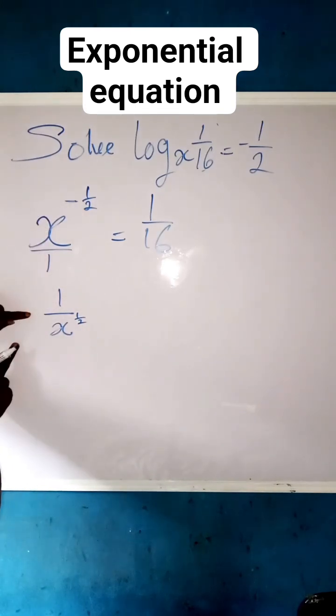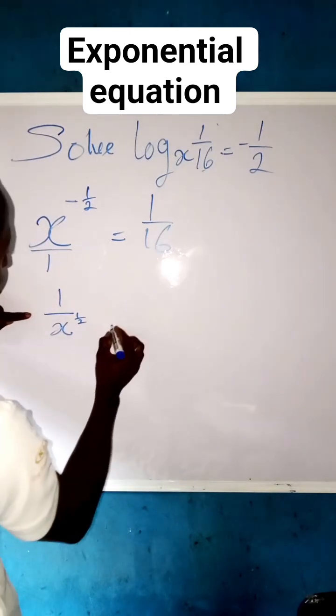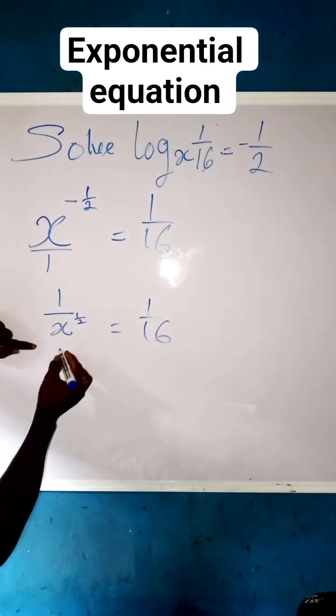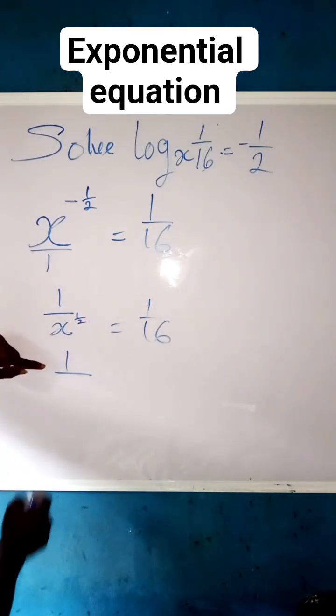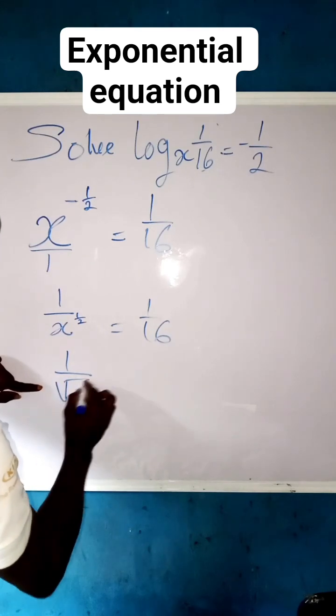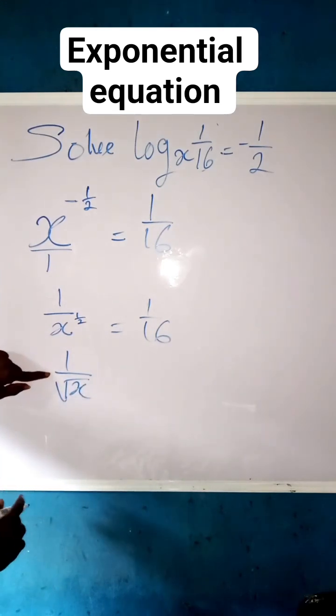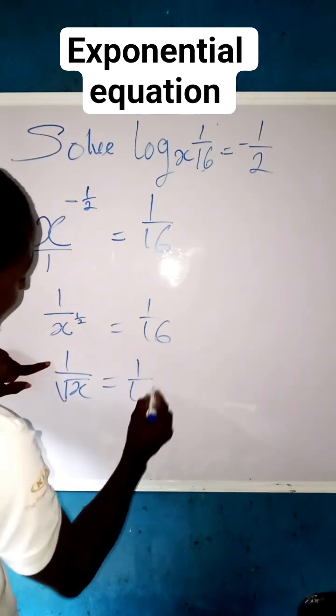So then equals to 1 over 16. Now we have 1 over x, this 1 over 2 we can equally write it to be root x, using law of indices. Then equals to 1 over 16.